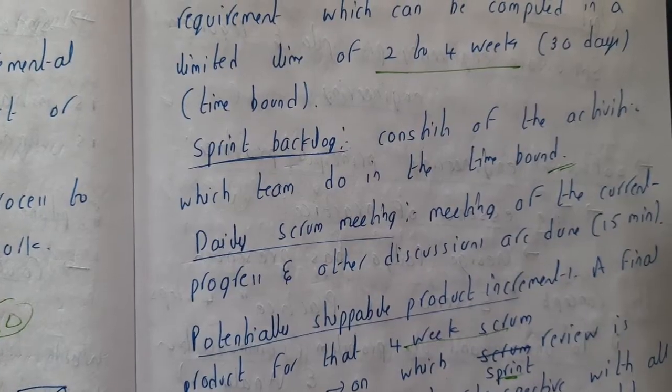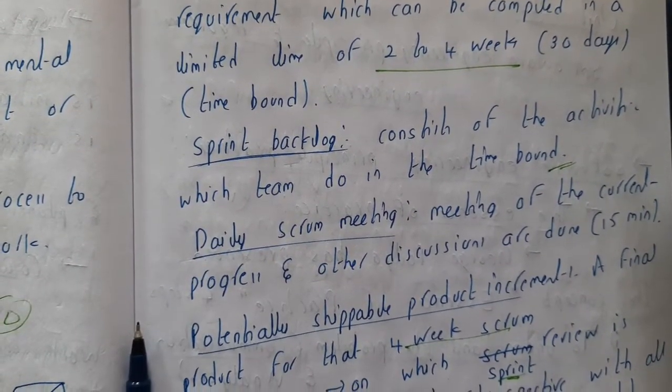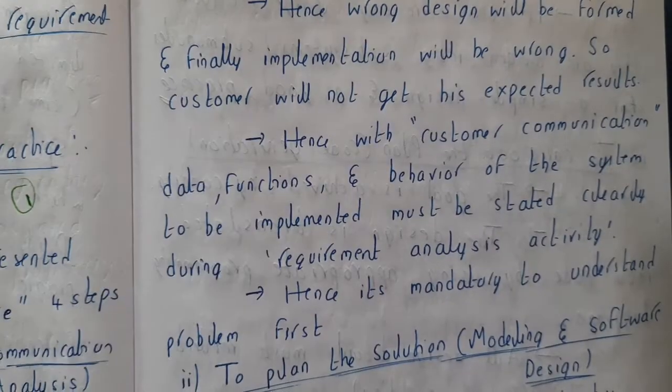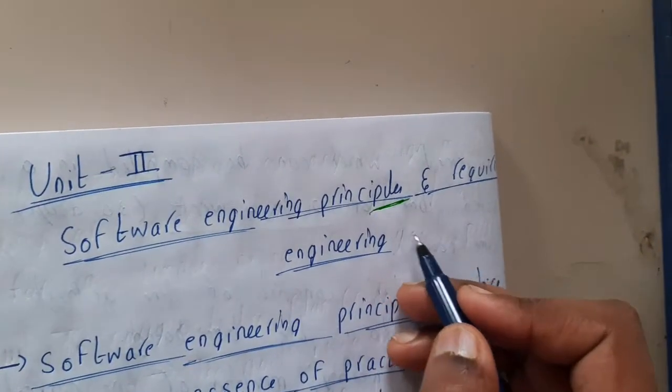I hope everyone got a clear idea on this scrum model. In the next lecture, we are going to start with some basic principles. We are moving on to the next unit. In the next unit, we will be discussing mainly about software engineering principles and requirement gathering.